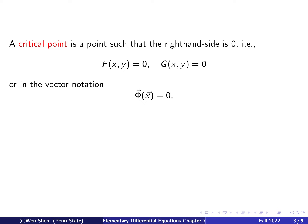For an autonomous system, there is a point — some value of X and Y — which is very important. These are called critical points. The definition of a critical point is a point such that the right-hand side is zero, meaning capital F equals zero and capital G equals zero. In vector notation, this means Phi vector is zero at this X vector. At a critical point, X prime and Y prime will be zero, so the system is not moving. If you start at a critical point, you stay there — it's also called an equilibrium for that reason.